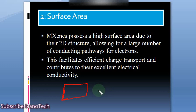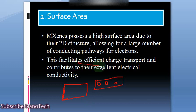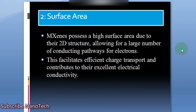The thickness of the MXene sheet lies in the nanometer range. The higher surface area means that most of the atoms on the top layer are unbonded. These unbonded atoms possess higher energy, which makes them unstable. They have free or unpaired electrons, and these unpaired electrons facilitate movement and bond formation. This facilitates efficient charge transport and contributes to the excellent electrical properties of MXene.